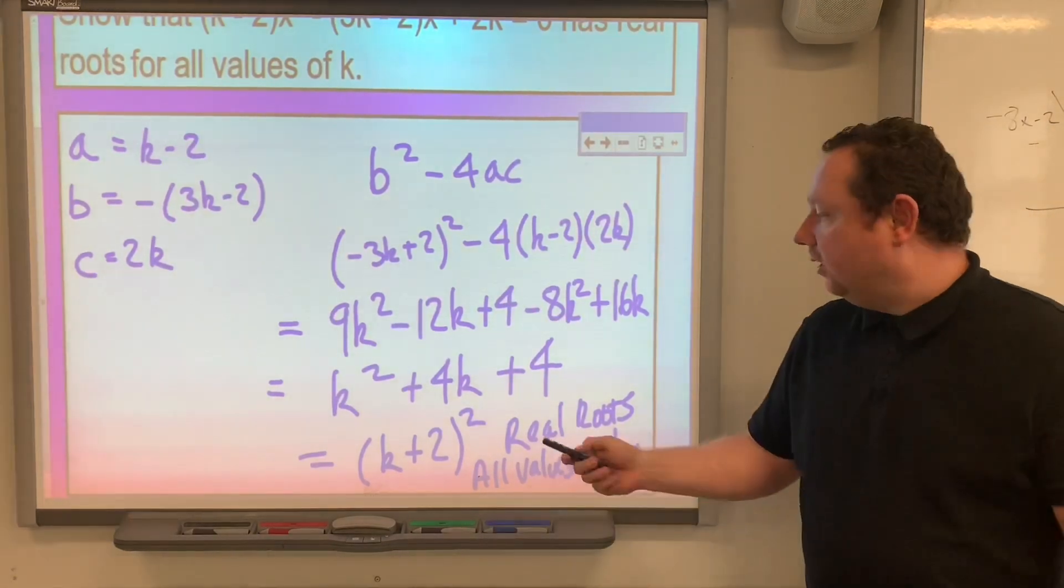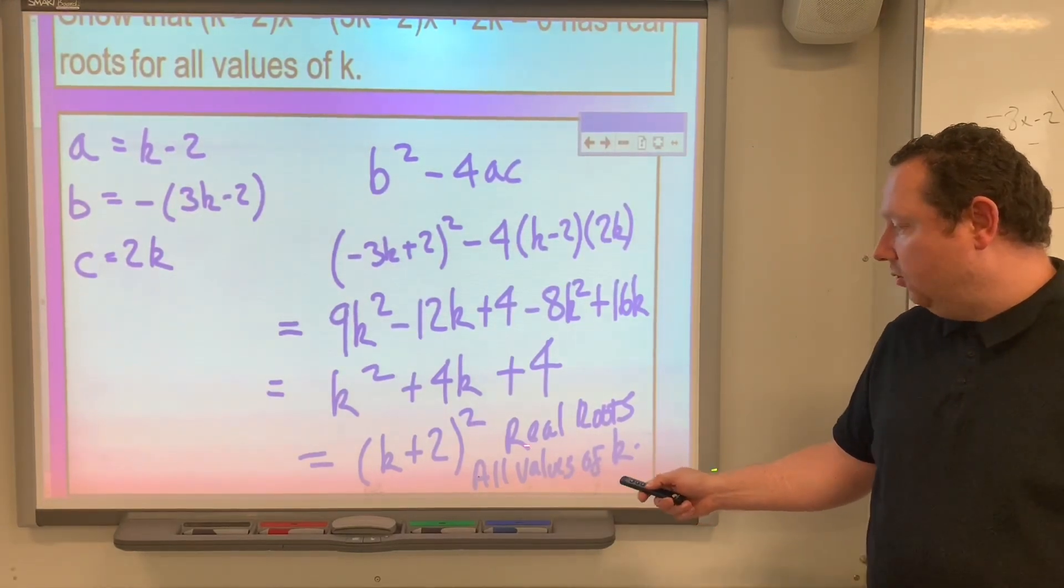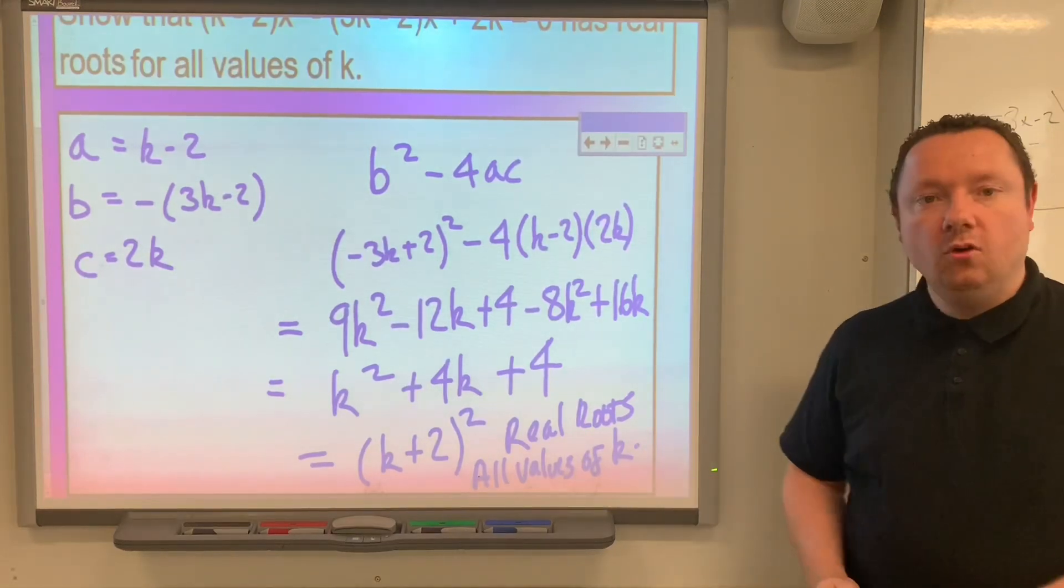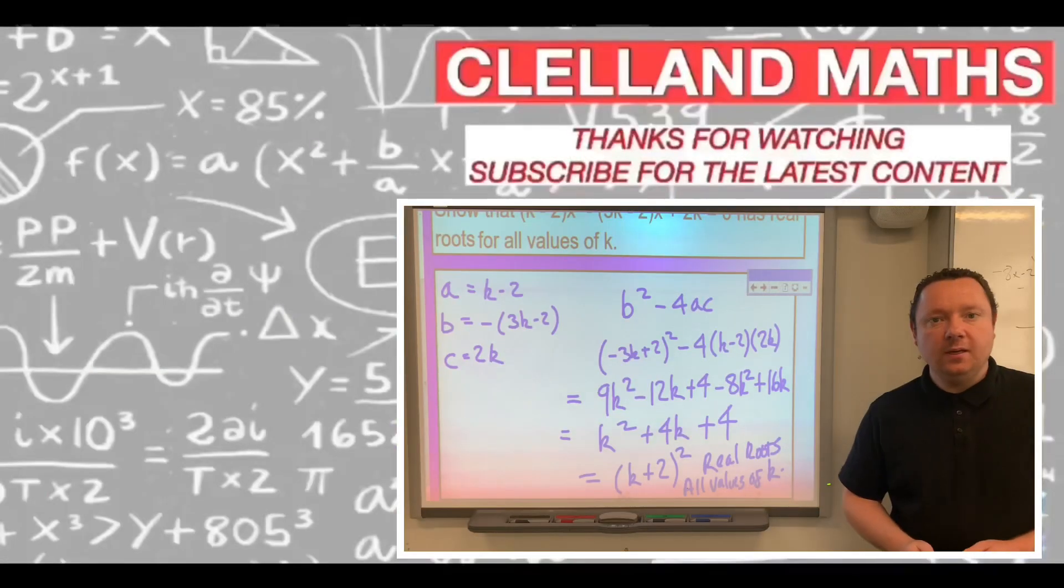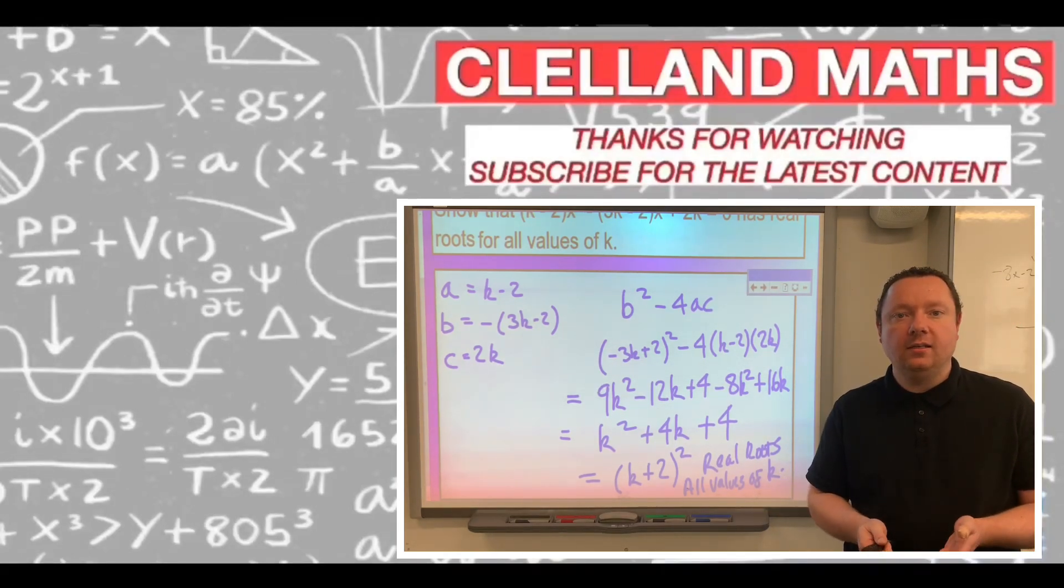So just remember that little trick: if you end up being able to complete the square and you get a perfect square with no number on the end, then if this is the discriminant it means it's definitely got real roots. This has been quite a bit massive. Today we've been looking at the discriminant and how we can use the discriminant to find the values of unknown parts of our equations.